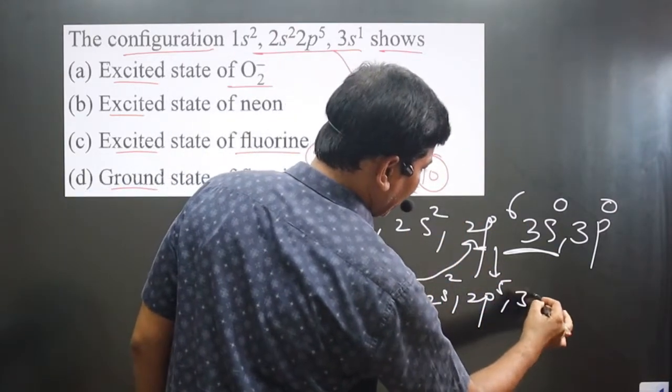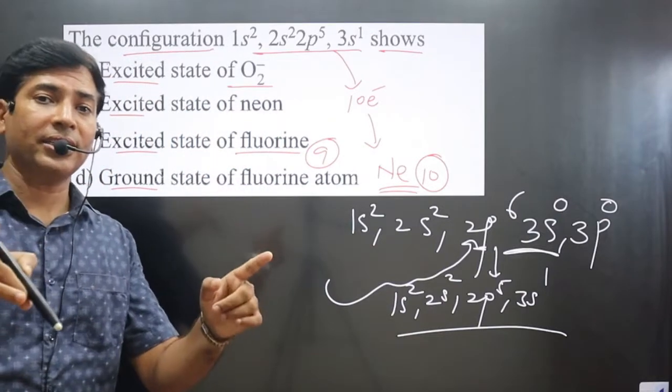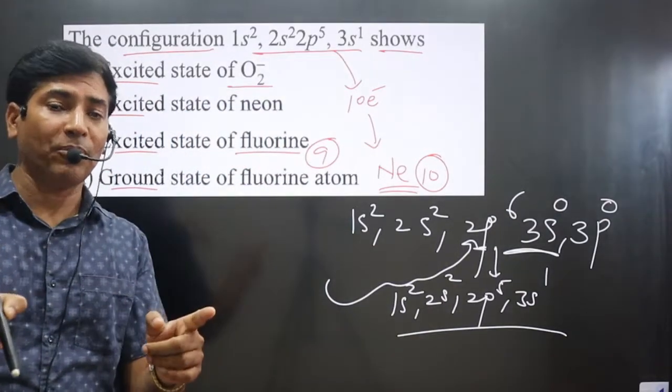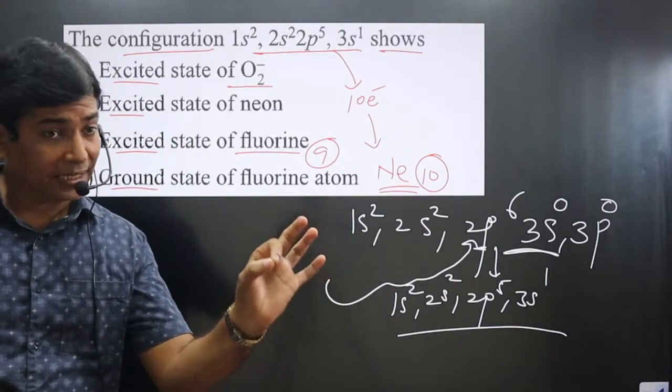Whether it's ground state or excited state, the number of electrons remains the same. Only one thing happens: electrons jump from lower energy orbit to higher energy orbit.